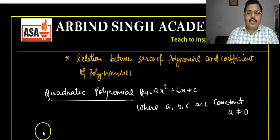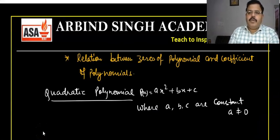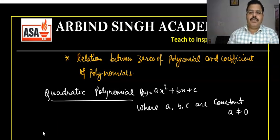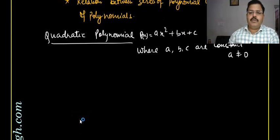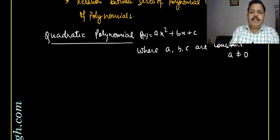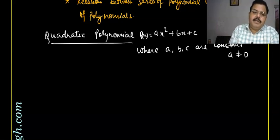Let us discuss the relation between zeros of a polynomial and the coefficient of a polynomial. The quadratic polynomial P(x) is equal to ax² + bx + c, where A, B, C are coefficients and A is not equal to 0. Why is A not equal to 0? Because if A is equal to 0, this becomes bx + c, which is considered a linear polynomial.